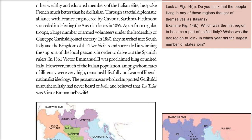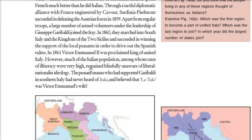In 1861, Victor Emmanuel was proclaimed the King of United Italy. Most of the population were illiterate — they didn't even know who supported Garibaldi or what Italia meant. They believed that La Italia was Victor Emmanuel's wife. This is quite ironic.